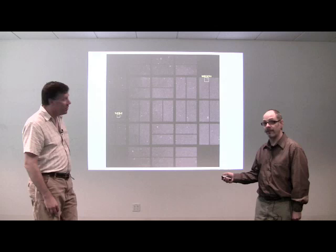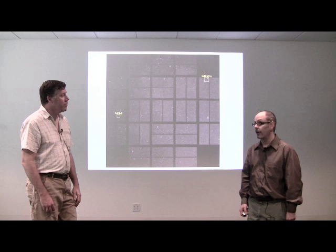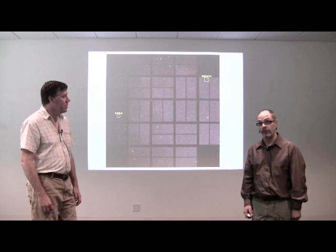During nominal science ops, Kepler's focal plane will be making an image just like this every half hour. At the end of which, we cut out little postage stamps containing just the target star of interest to us. We have over 100,000 target stars at the beginning of the mission. In fact, about 150,000 target stars.